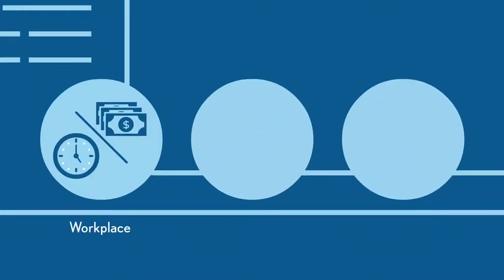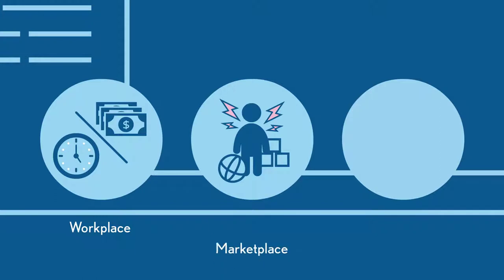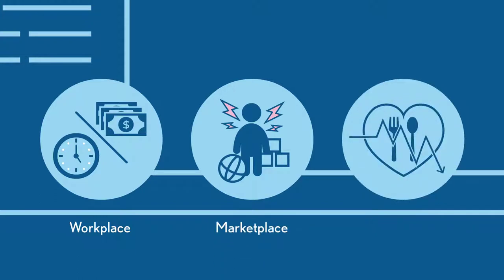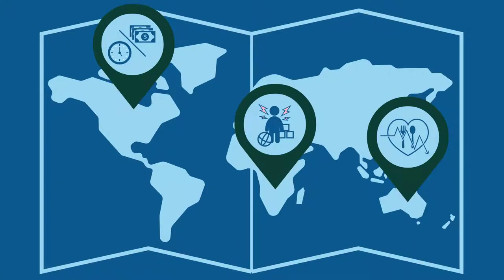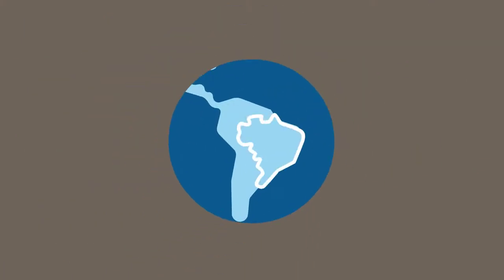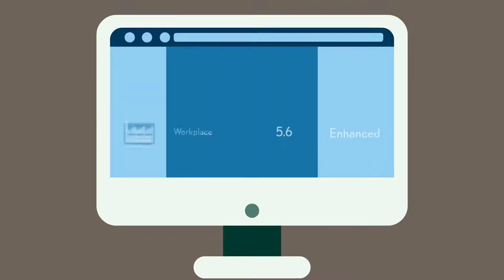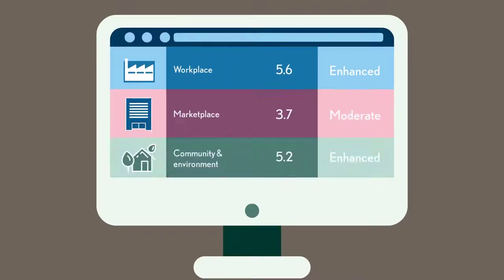Data like wages and working hours in the workplace, children's injuries from products in the marketplace, and child malnutrition in communities. Putting these data together gives us a children's rights map of the whole world, and you can drill down to examine detailed ratings for every single aspect.